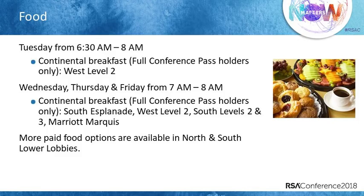Moving on to food. On Tuesday morning from 6:30 a.m., we'll be serving a continental breakfast for full conference pass holders in West Level 2, since our keynotes kick off that morning on West Level 3. Then on Wednesday, Thursday, and Friday from 7 a.m., we have continental breakfast in different locations: the South Esplanade, West Level 2, South Levels 2 and 3, and the Marriott Marquis. There are also concession stands and paid food options in the North and South lower lobbies.